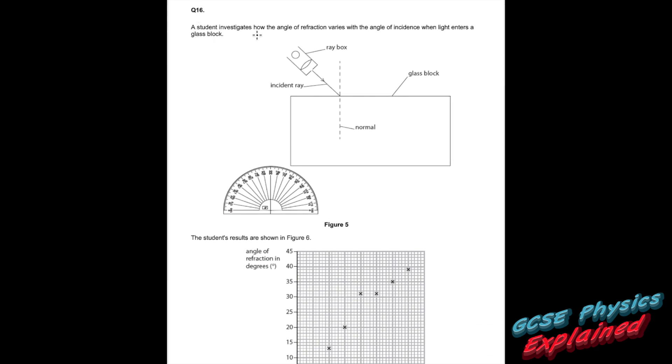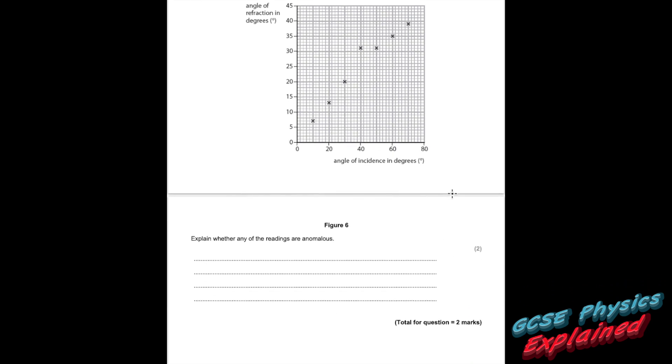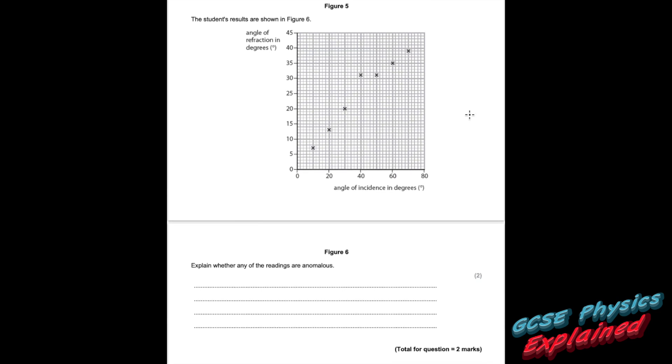Question 16. The student investigates how the angle of refraction varies with the angle of incidence when light enters a glass block. We've seen a question like this before. Very similar. It's the same picture, isn't it? The student's results are shown in figure 6. Explain whether any of the readings are anomalous. Yeah, that one. Why? Because it doesn't fit the pattern. So it's the result when the angle of incidence was 40 degrees. At two marks we need to put something: it doesn't fit the pattern. Needs to be down there really, doesn't it?